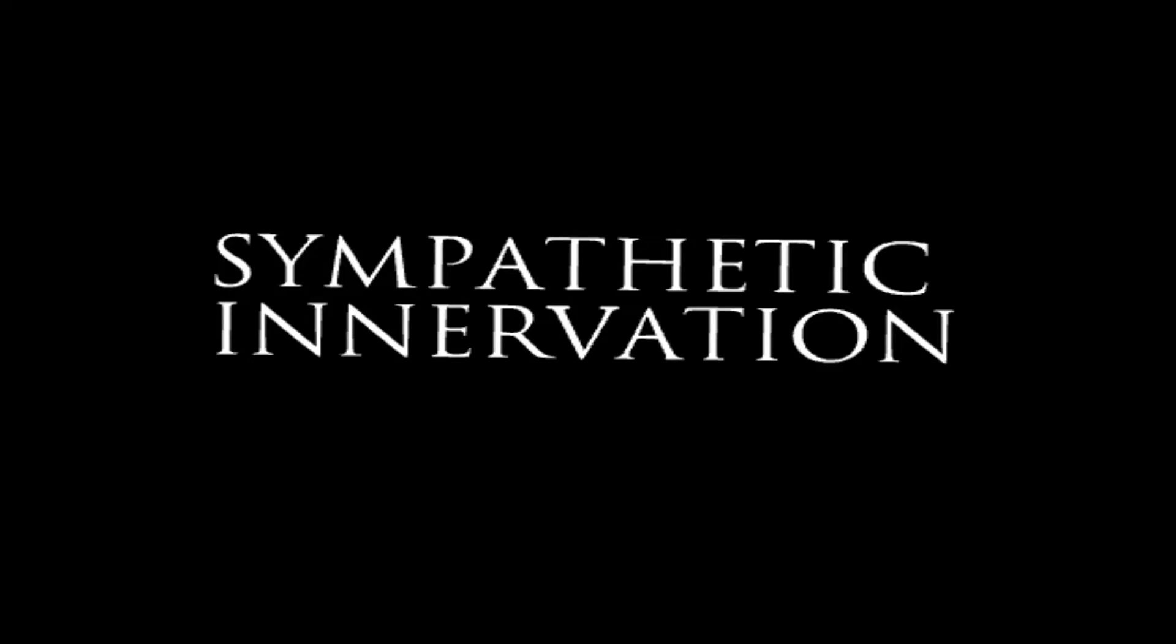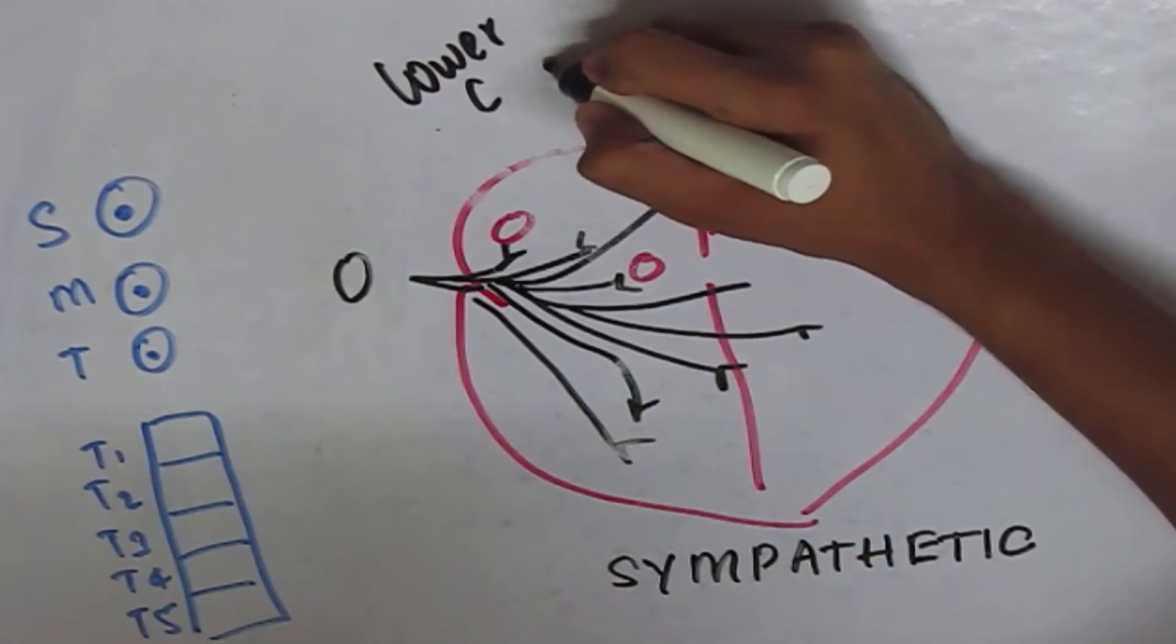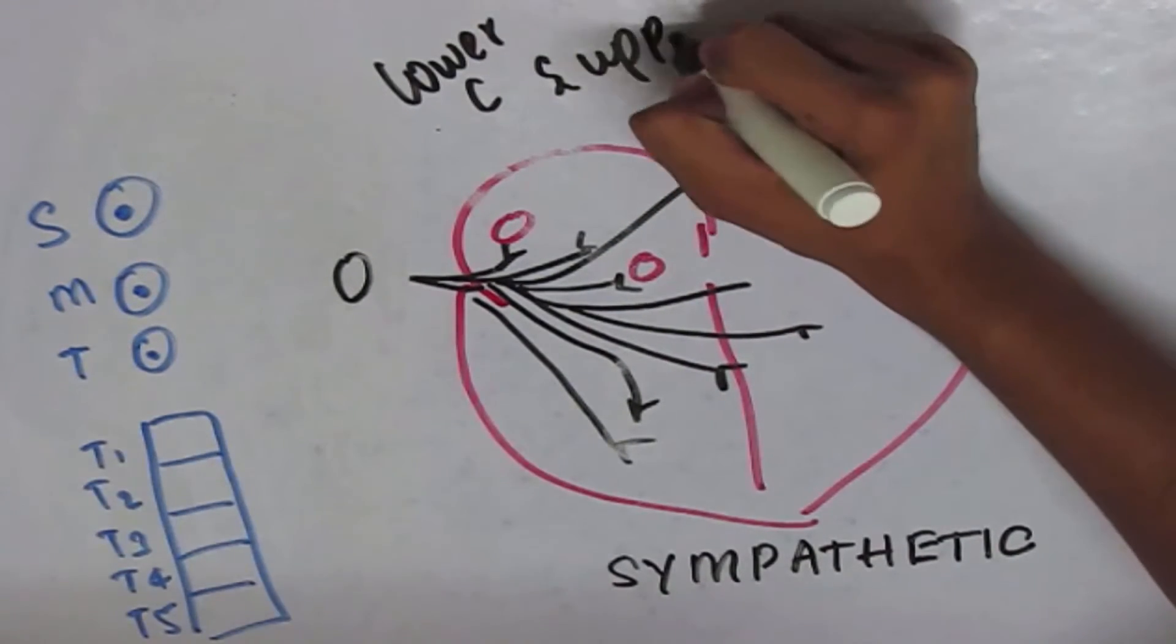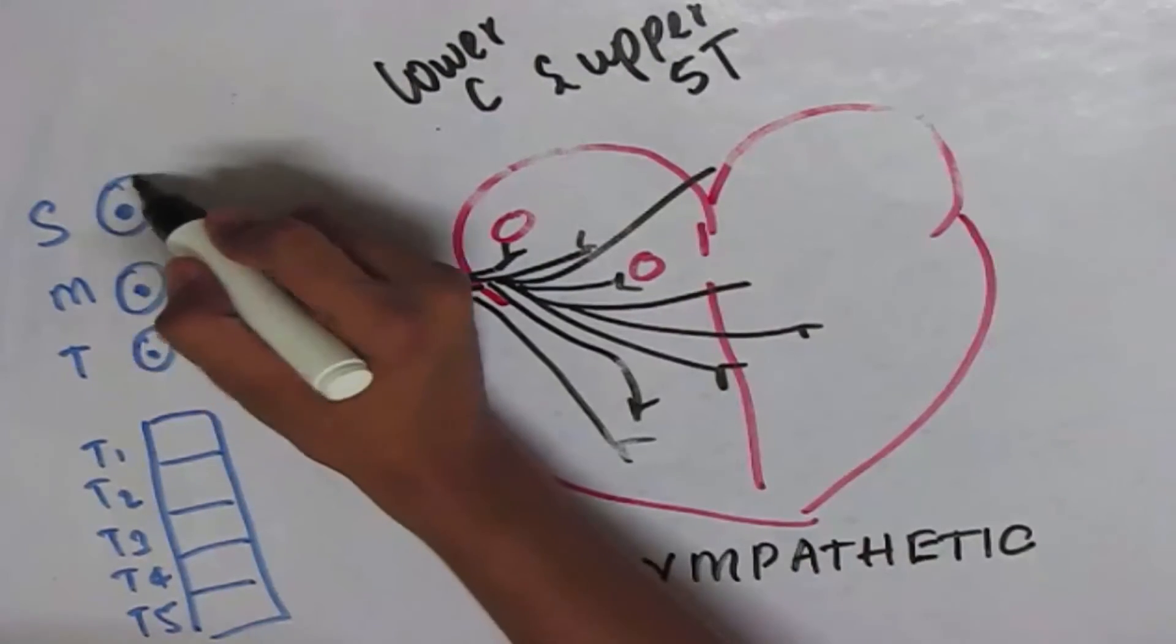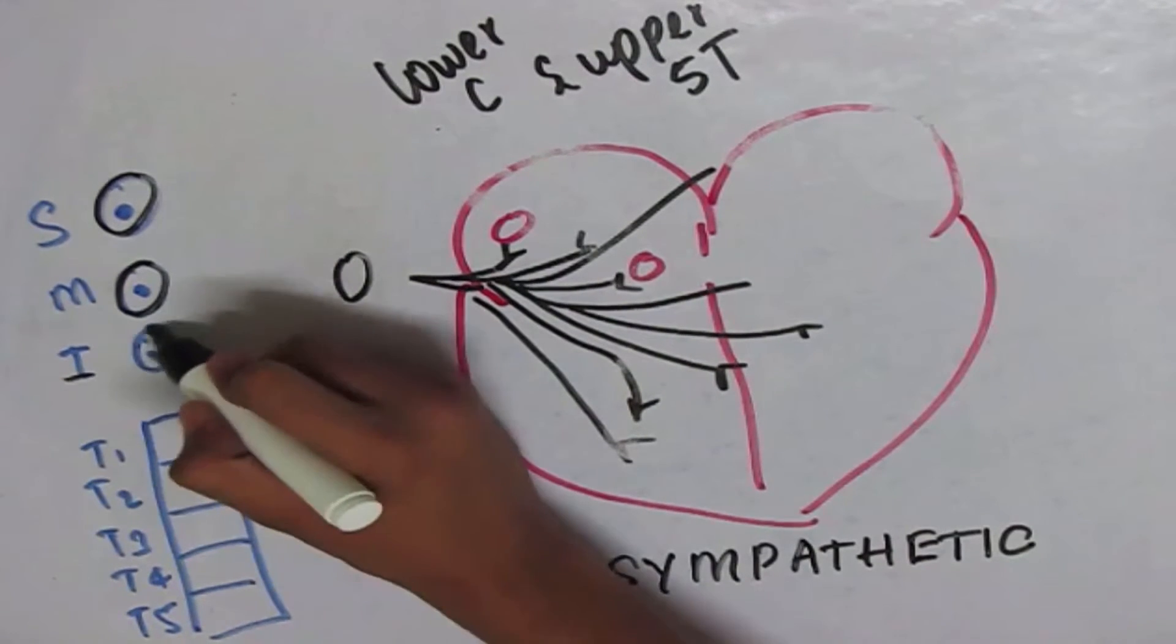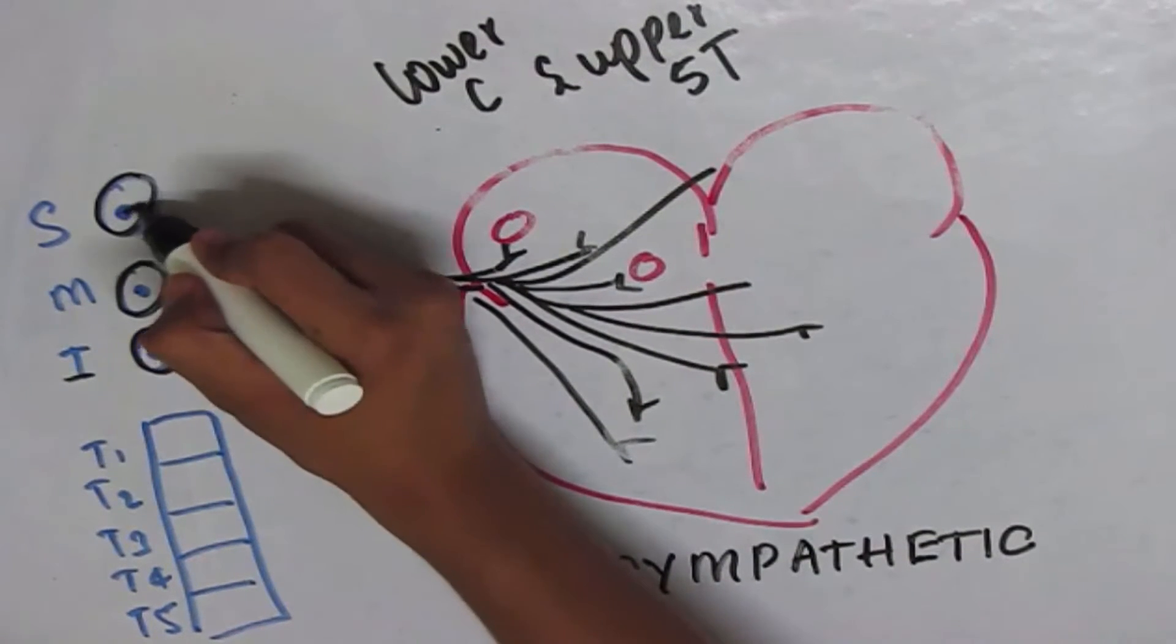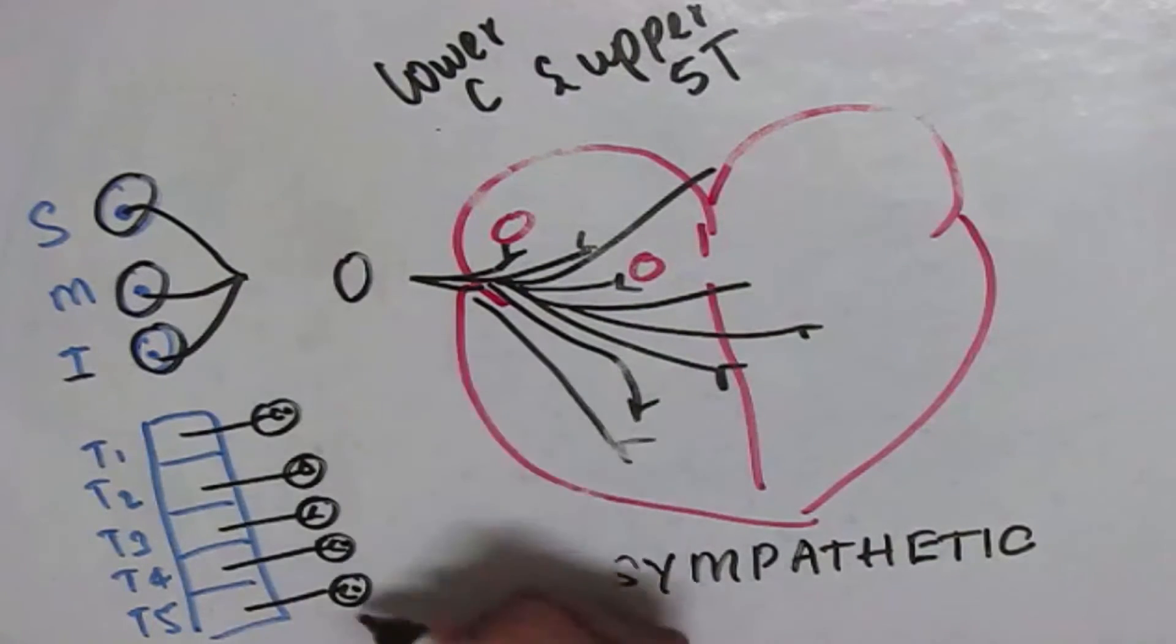Now I am going to be telling you about the sympathetic innervation of the heart. The sympathetic fibers arise from the lower C and the upper five thoracic segments, from the superior, middle, and inferior cervical ganglia and from T1 to T5.